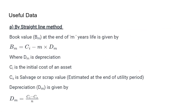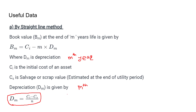Let's first calculate using the straight line method. The book value BV at the end of m years is given by: BV_m = CI − m × d_m, where d_m is the depreciation at the mth year, CI is the initial cost of the asset, CS is the salvage or scrap value, and depreciation at the mth year is given as d_m = (CI − CS) / n.